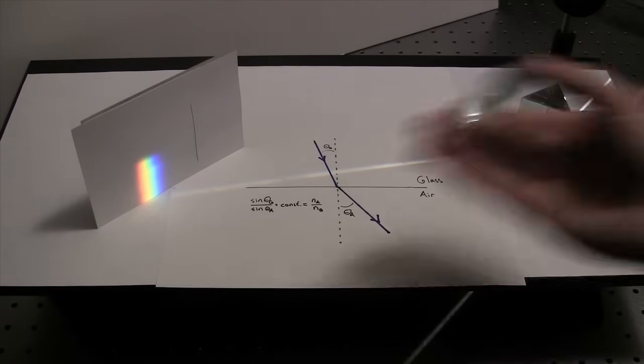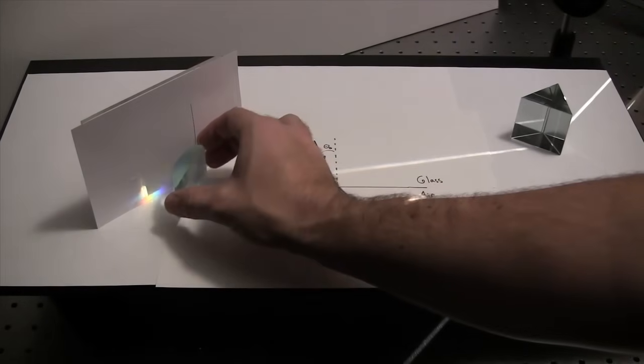You start with the same system you had before, and then you place a lens in the system.